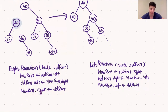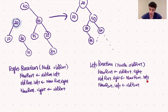Similarly for the left rotation, we break off the right child of our old root and make that the new root. We take the old root's right child and set that to the new root's left. And lastly we make the new root the root of the tree by setting its left child to be the old root.